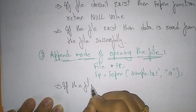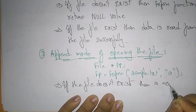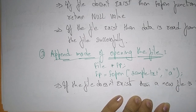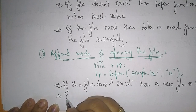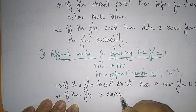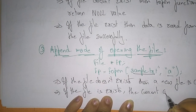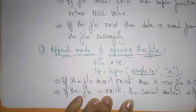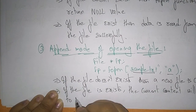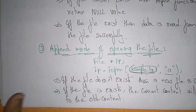If the file does not exist, then a new file is created — just like in write mode, in append mode also a new file is created if the file does not exist. Suppose the file already exists — if sample.txt is already present, then the current content you want to append will be appended to the old content, meaning it just adds to the old content. So both the new content and the old content will be present in sample.txt.